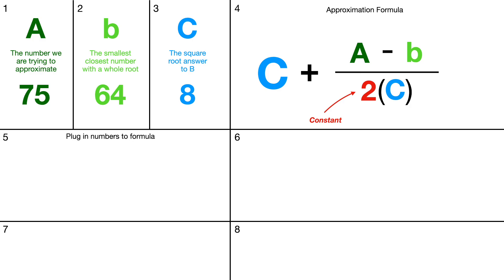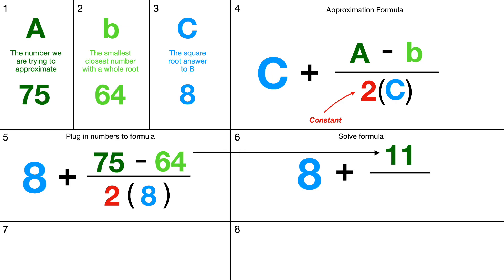Now we'll plug in our numbers. We have C, which is 8, plus on top A, which is 75 minus B, which is 64, divided by 2 times C, which is 8. Now we solve the formula: 8 plus, doing the top first, 75 minus 64 is 11, and 2 times 8 is 16. So if you do 11 divided by 16 by long division, that gives you 8.6875, which we can round to two digits: 8.69.